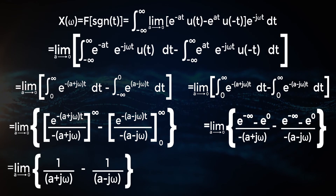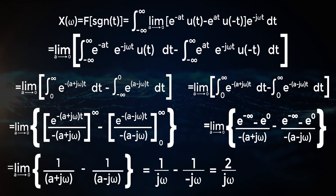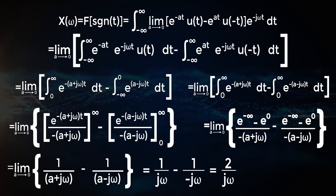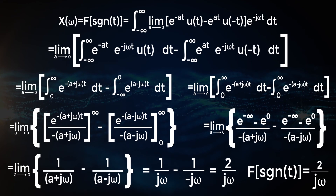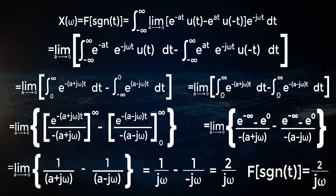Which is equal to the limit as a approaches zero of 1/(a+jω) minus 1/(a-jω), which equals 1/(jω) minus 1/(-jω), which equals 2/(jω). So the Fourier transform involving the signum function is equal to 2/(jω).